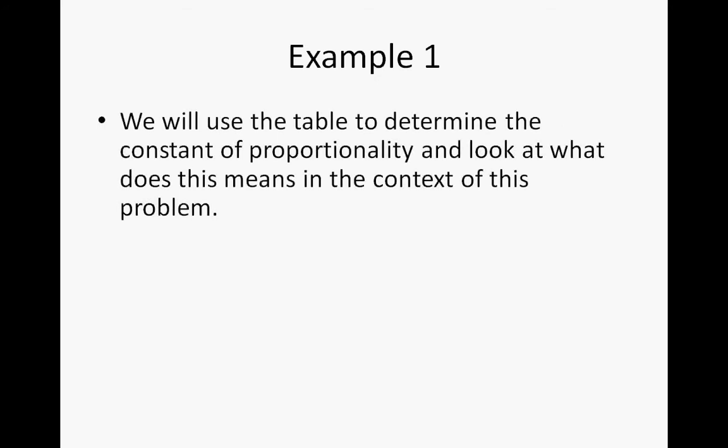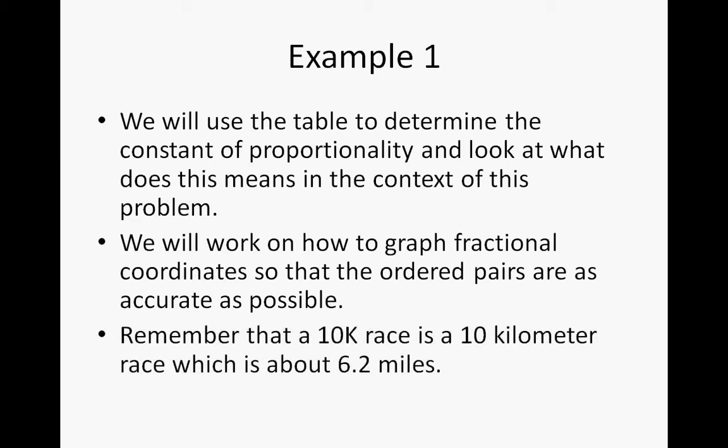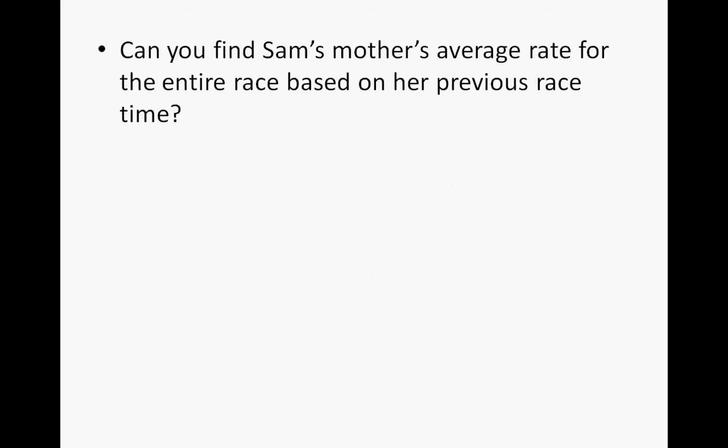Let's take a look at example 1. We're going to use a table to determine the constant of proportionality and look at what this does in the context of the problem. We're going to work on how to graph the fractional coordinates so that the ordered pairs are as accurate as possible. Remember that a 10K race is a 10 kilometer race, which is about 6.2 miles.